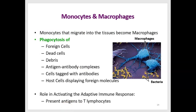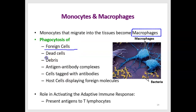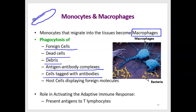Monocytes, when they migrate into tissues, are now called macrophages. Macrophages can engulf cells, dead cells, debris, antigen-antibody complexes, and any cells that have been tagged by antibodies. For example, if an antibody has recognized an E. coli bacterium, the antibody binds to it — essentially tagging it for destruction — and then the macrophage will recognize the antibody-bound cell and engulf it.